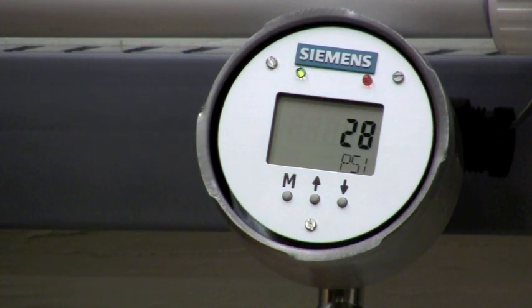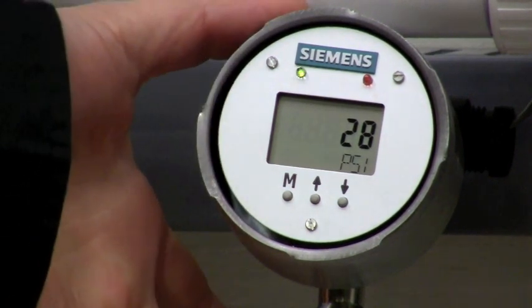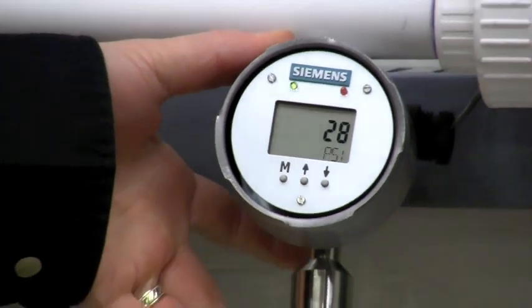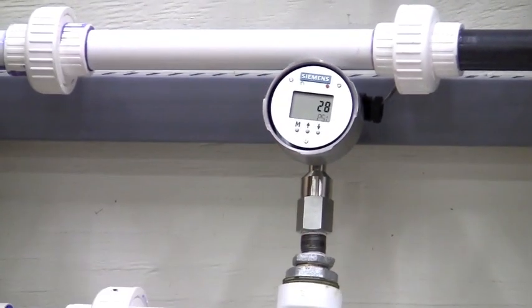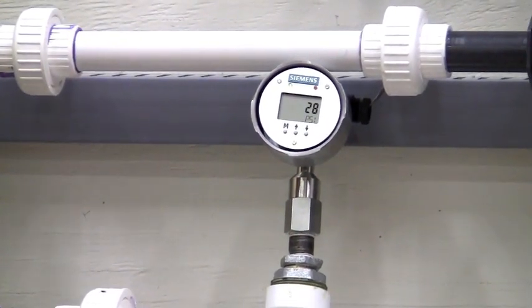The large half inch process connection and small overall size make the ZD ideal in retrofit applications to replace old needle gauges as well as add a transmitter.